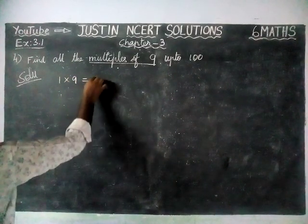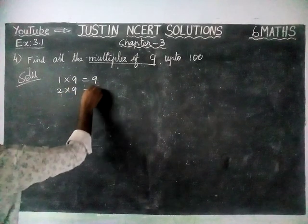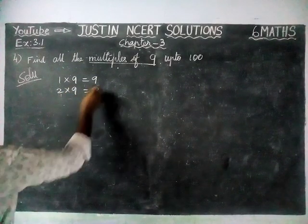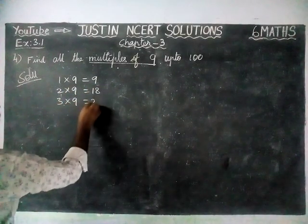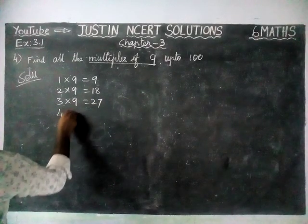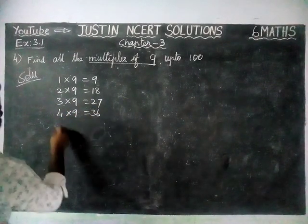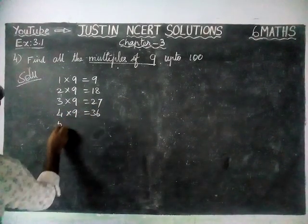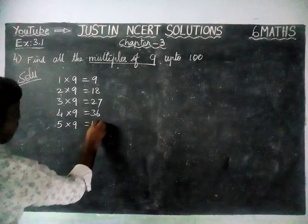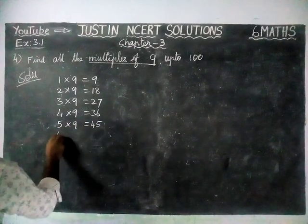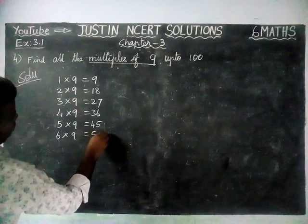1 nine is 9, 2 nines are 18, 3 nines are 27, 4 nines are 36, 5 nines are 45, 6 nines are 54.